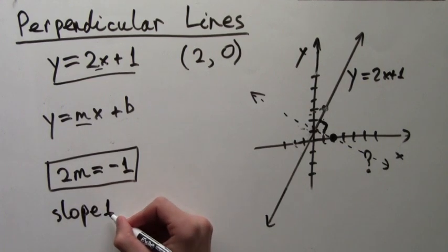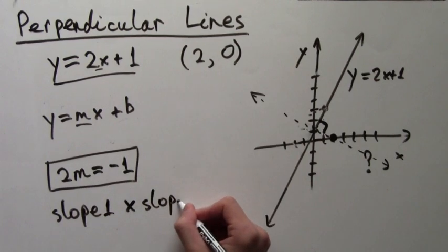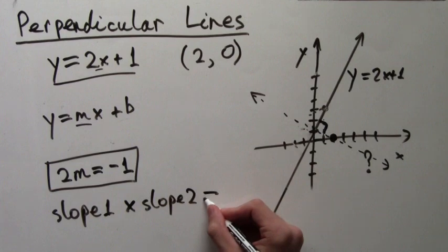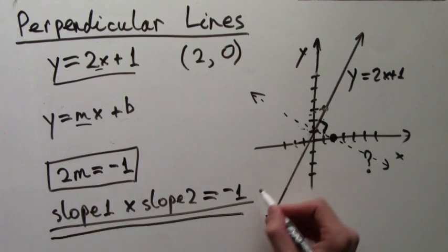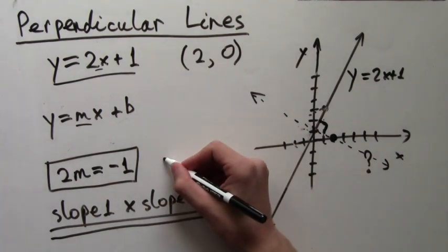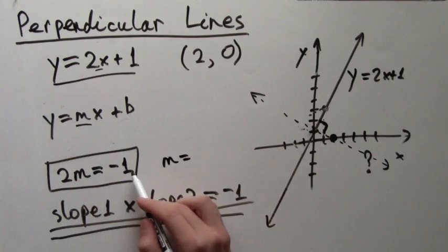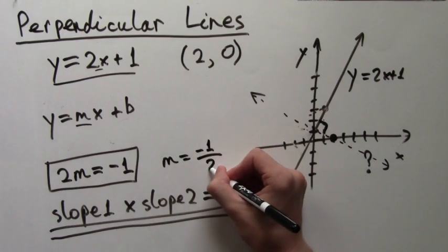In general, if you have two lines with slope 1 and slope 2, whatever they may be, slope 1 times slope 2 is equal to negative 1, if the lines are perpendicular. So in our case, we have 2m equals negative 1. And if we divide by 2 on both sides, this gives us that m equals negative 1 half.